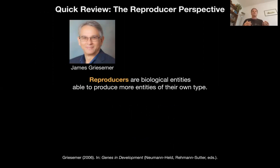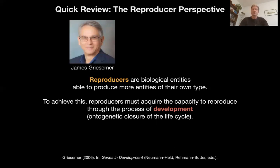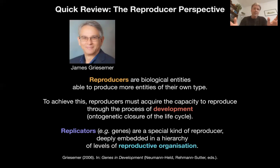Reproducers are biological entities able to produce more entities of their own type. To achieve this, reproducers must acquire the capacity to reproduce, which Chrismar calls development, and that provides the ontogenetic closure of the life cycle. Development in this view comprises all the different processes involved in closing a life cycle — metabolic, physiological, developmental processes functionally important for closing the life cycle. Replicators, genes, are a special kind of reproducer and they are deeply embedded in a hierarchy of levels of reproductive organization.